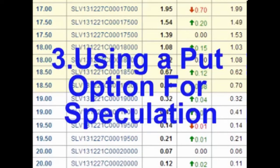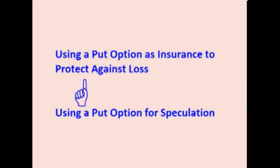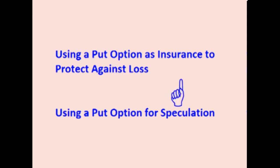Hello and welcome. In this video, we will look at using put options for speculation. In the last video, we looked at an example of using a put option as an insurance policy to protect against loss on a stock the trader already owned. In the example, the trader owned 100 shares of SLV, the silver ETF. He was bullish long term, so he didn't want to sell his shares of SLV, but he was concerned that SLV could drop in price in the near future. Therefore, he bought a put option to lock in a preset sell price in case SLV dropped in price. A put option could also be used as a speculative instrument.